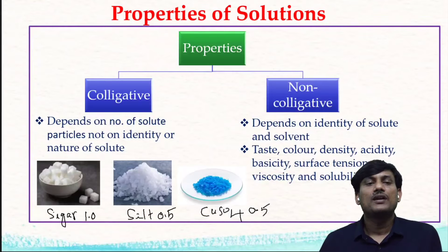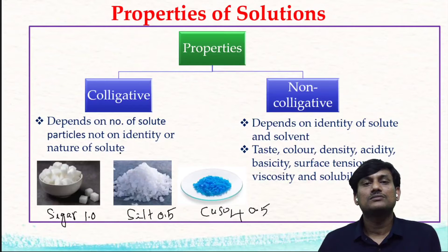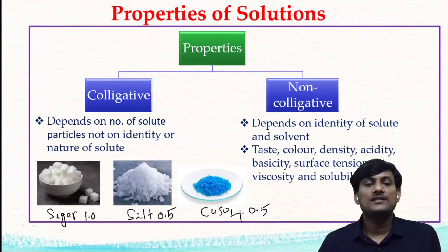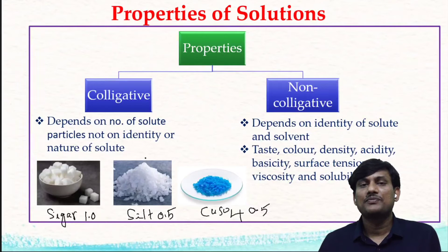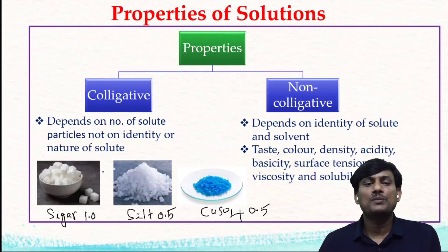This means colligative properties of dilute solutions depend on the number of solute particles, not on the nature or identity of the solute. Here we have taken three different types of solutes, but they have the same number of solute particles. That is why the four properties — vapor pressure, melting point, boiling point, and osmotic pressure — are the same for these three solutions.